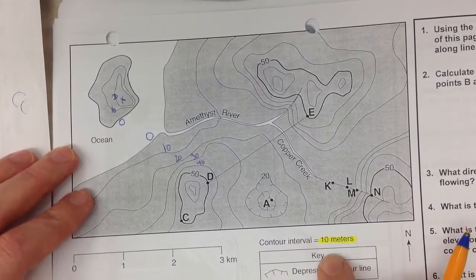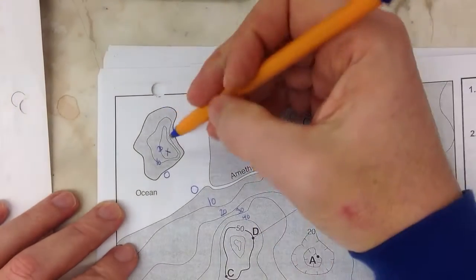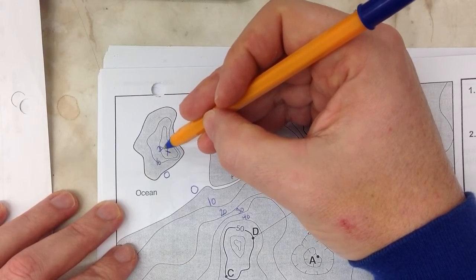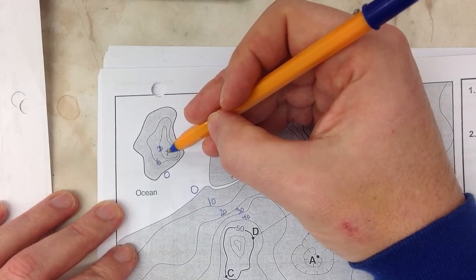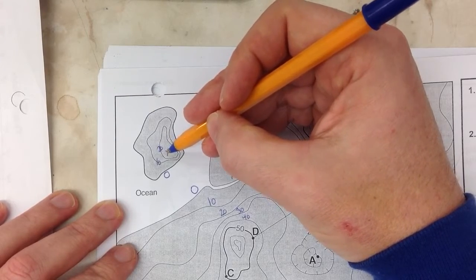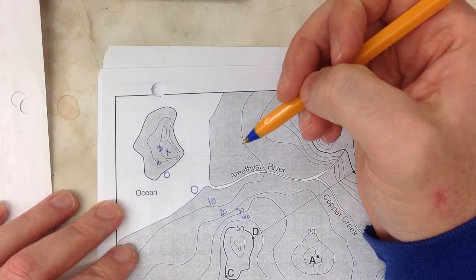Well, knowing that our interval is going by 10s, the next line would be 30. We do not have a 30 line though. What is the highest you can count to before you hit 30? The answer there is 29. The highest possible point of that island is 29 meters.